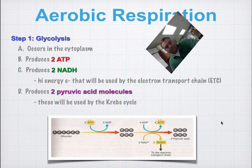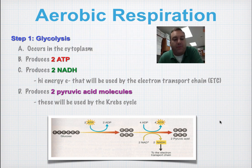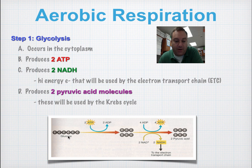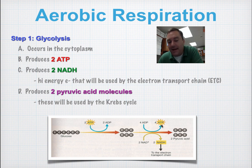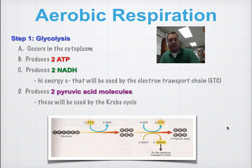Glycolysis is pretty simple. You're going to create three things: ATP, NADH, and two pyruvic acid molecules. First, glucose is chopped in half — it takes two ATP to make that happen, so you spend some energy to make some. Then you rearrange those six-carbon molecules into pyruvic acid, which creates four molecules of ATP. So your net gain is two ATP — that's your profit. You also create some NADH, which takes off and goes to the electron transport chain.